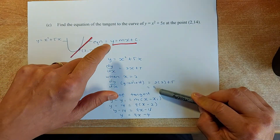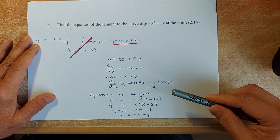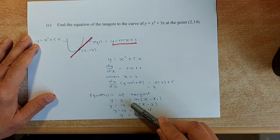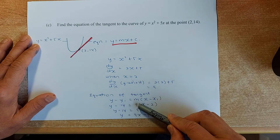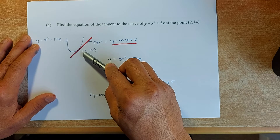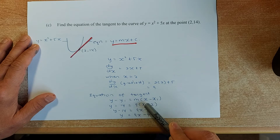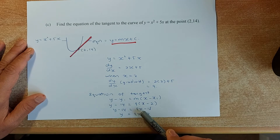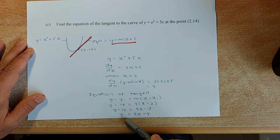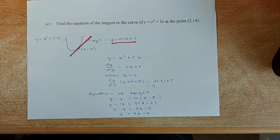Now use the gradient m = 9 and the point (2, 14) to find the equation of the tangent line using the formula y − y₁ = m(x − x₁). Substituting gives y − 14 = 9(x − 2). Expanding: y − 14 = 9x − 18. Adding 14 to both sides: y = 9x − 4. That gives you a Merit grade of M5 in the exam.